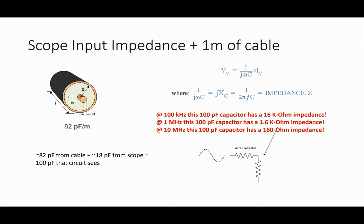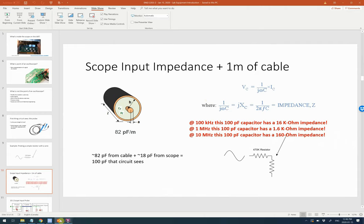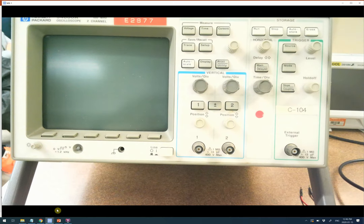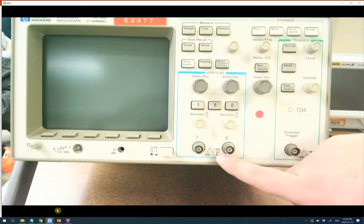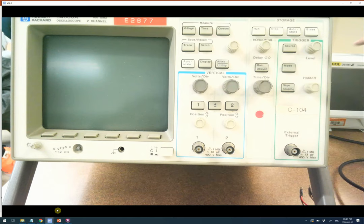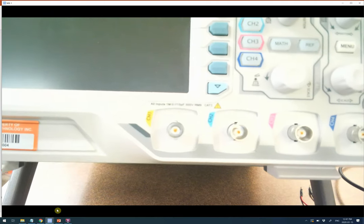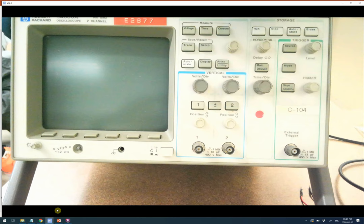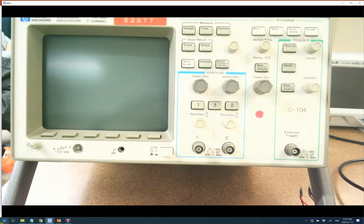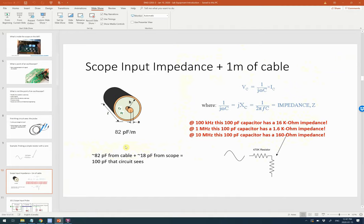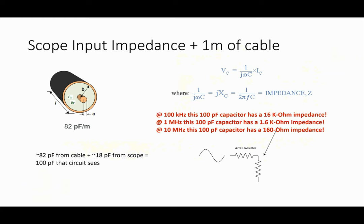The scope input itself has some input impedance — that will vary per scope. If you look at the ones here, they almost always say on the front: one megaohm input with 13 picofarads. This one also says one megaohm, 13 picofarad — that's pretty standard. So you're going to end up with something in the vicinity of 100 picofarads at the end of this wire — like a 100 picofarad capacitor.